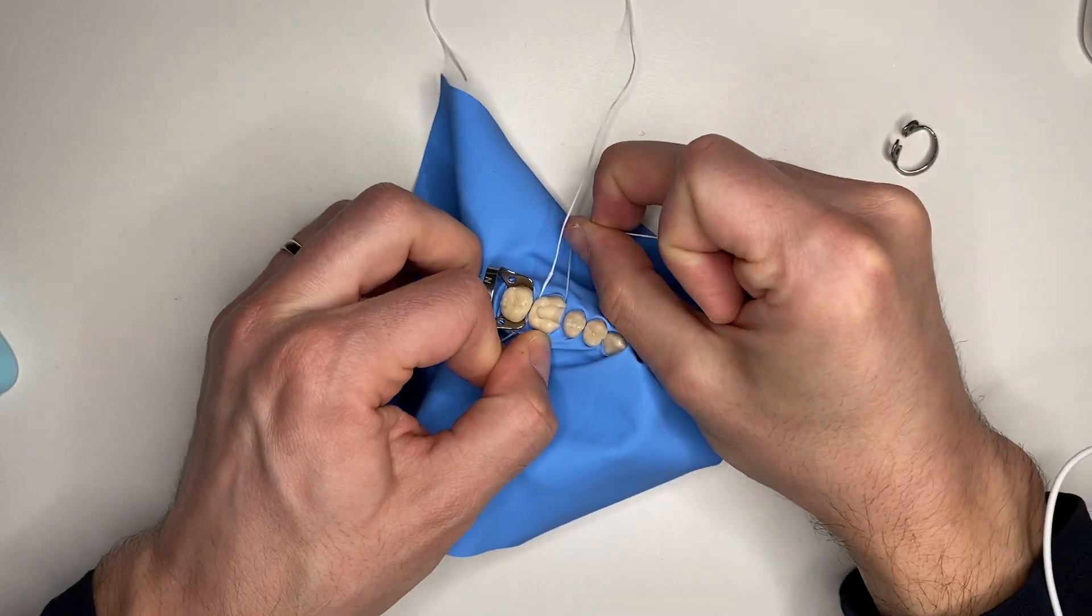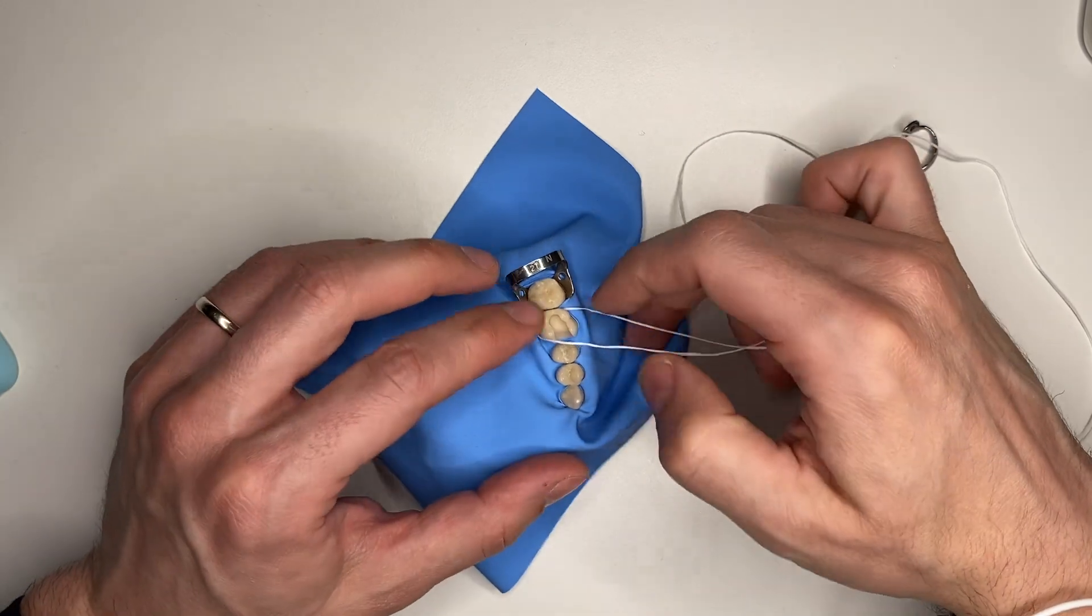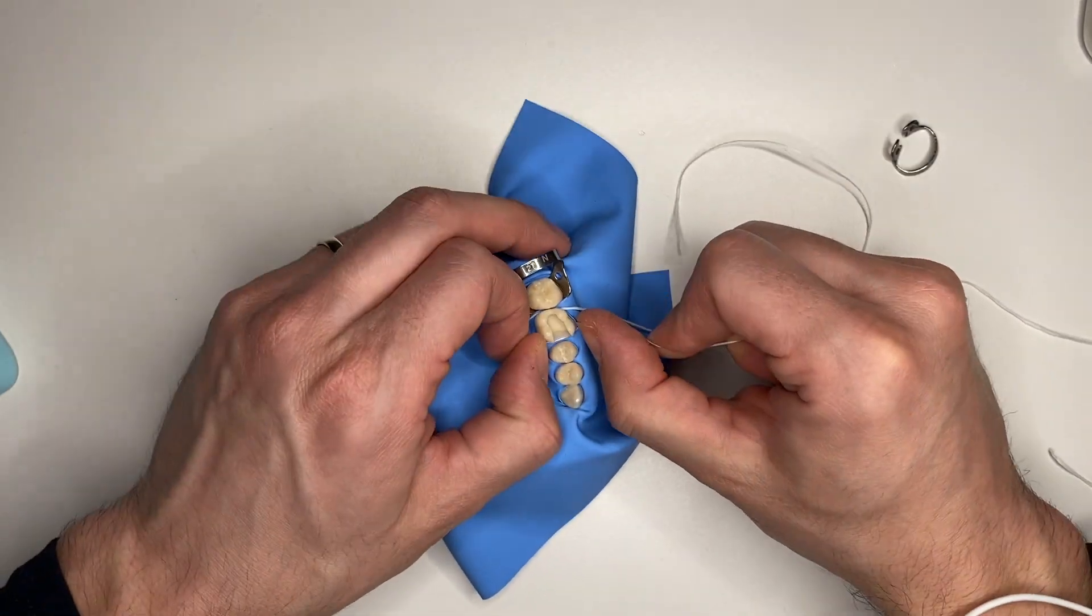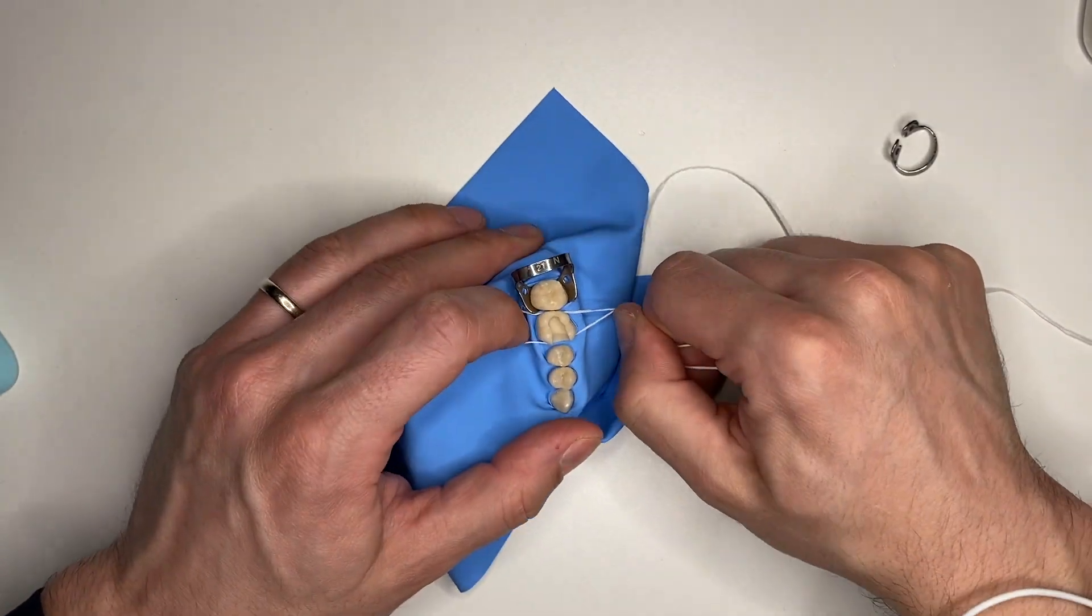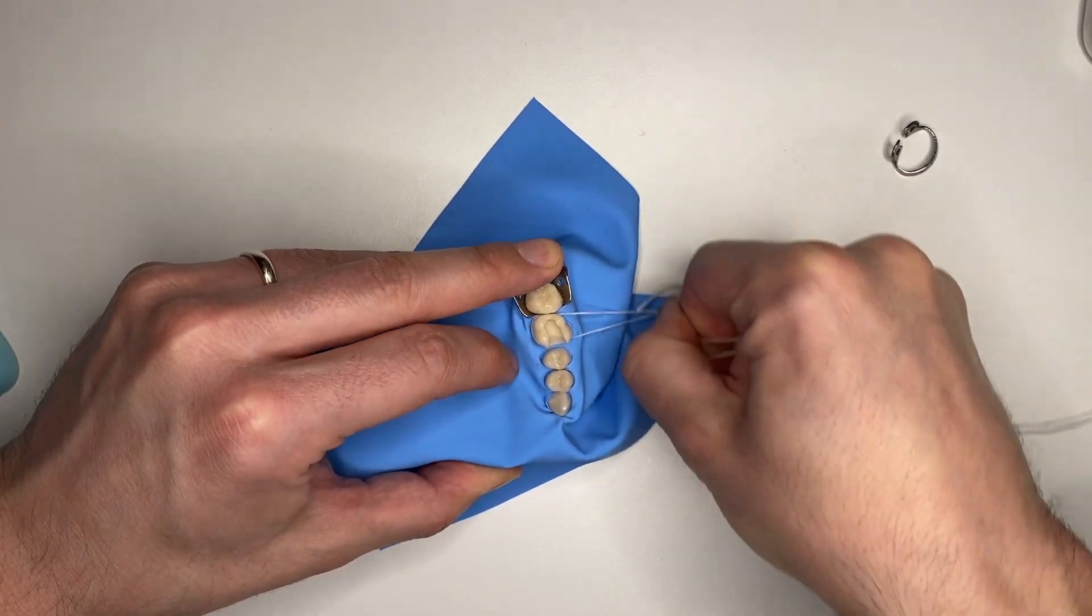As you can see, it invaginates the rubber dam rapidly. You can use a probe to do this.